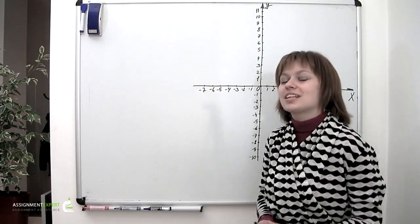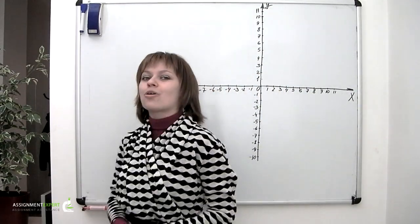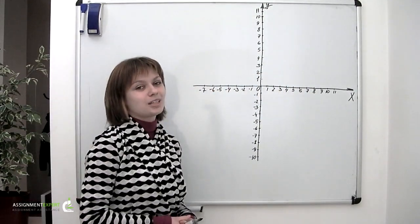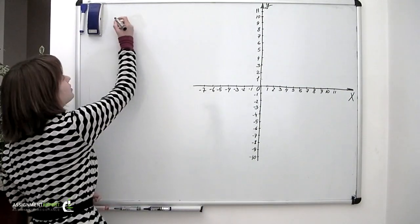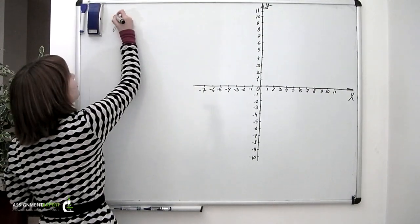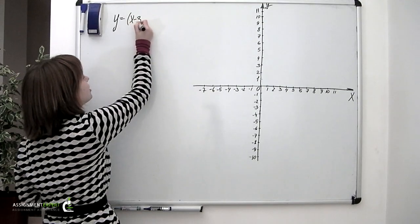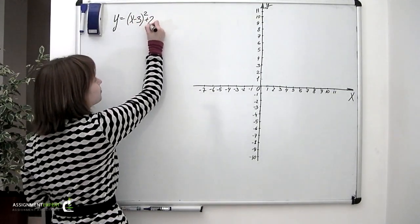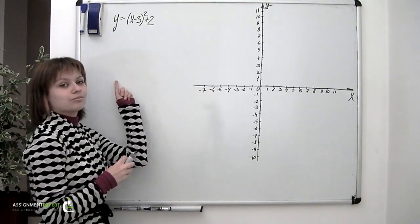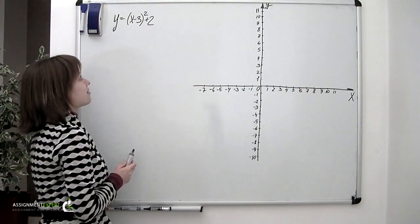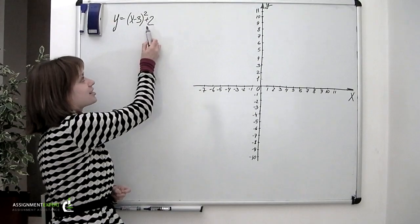As I mentioned while discussing an equation of the line in one of our previous videos, an equation itself is just a law according to which, out of all the numerous points on a coordinate plane, we only pick the ones conforming to this law. For example, y equals (x minus 3) squared plus 2 means that to find the y coordinate, we take the x coordinate, subtract 3, square the difference, and add 2.